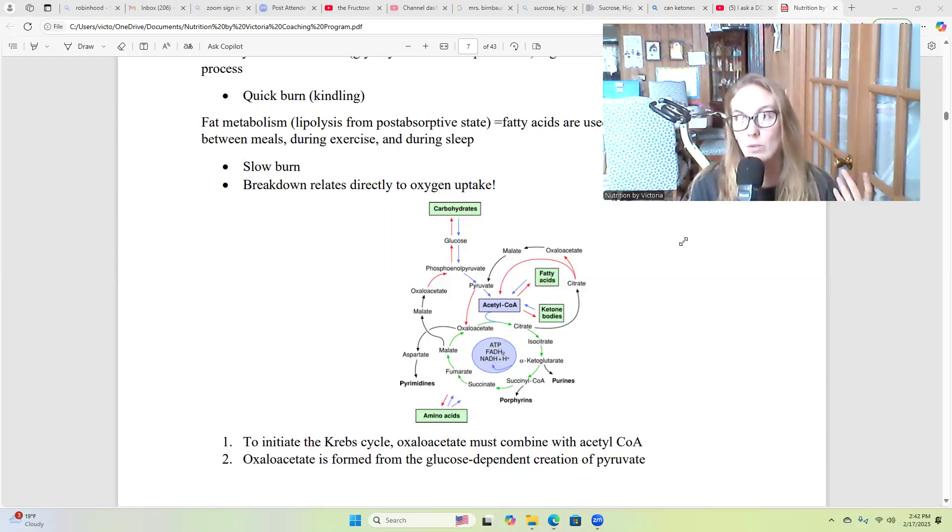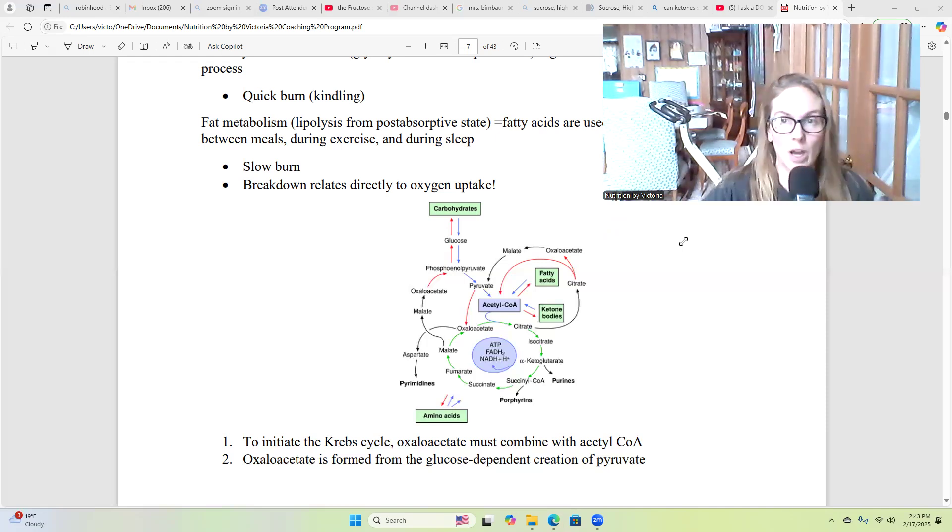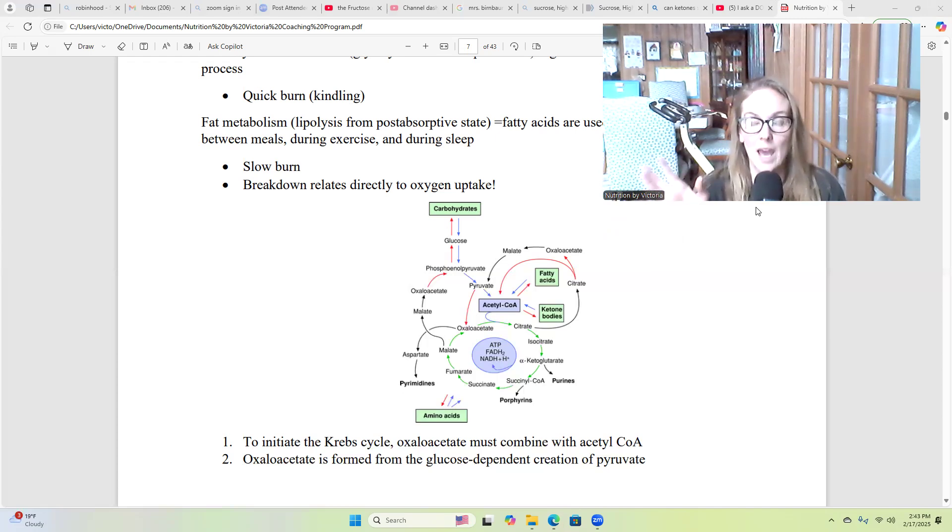Once we start running out of glucose or we're running gluconeogenesis for long enough, about 48 hours, we start creating ketone bodies from acetyl-CoA, from the acetyl-CoA buildup. So because we're not regenerating oxaloacetate or we're not creating enough of it from pyruvate, we slow this cycle down. We get a buildup of acetyl-CoA. And because there's a need for energy coming from the cells and the body being like, hey, we're having a problem. There's low energy availability here. We start to create ketone bodies and enter into ketogenesis and ketosis.